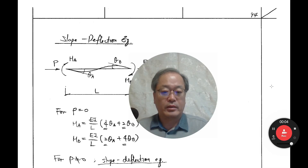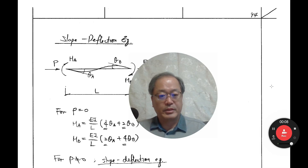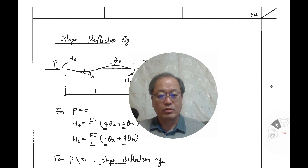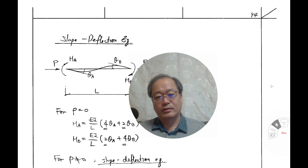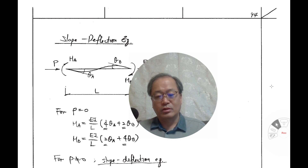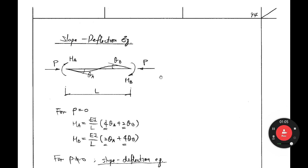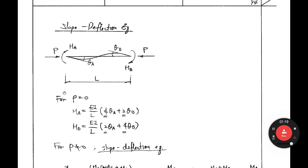Hello everyone. I would like to present the slope deflection equation. When you were in undergraduate study you already learned the slope deflection equation. Here, in structural stability, you have axial force at the beam-column, so the slope deflection equation becomes complicated. This member should be called a beam-column. When in undergraduate study, there is no P — P equals zero.